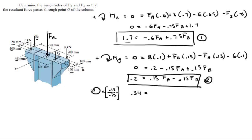Negative 0.6FA times 0.15 over 0.75 gives me negative 0.12FA, and 0.75 times 0.15 over 0.75 gives me 0.15FB. Now I'm going to add these two equations together, and the FB's are going to cancel out.